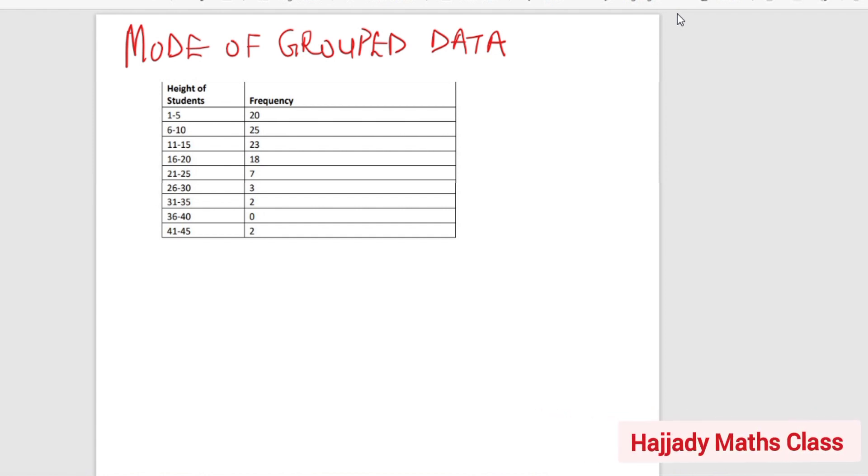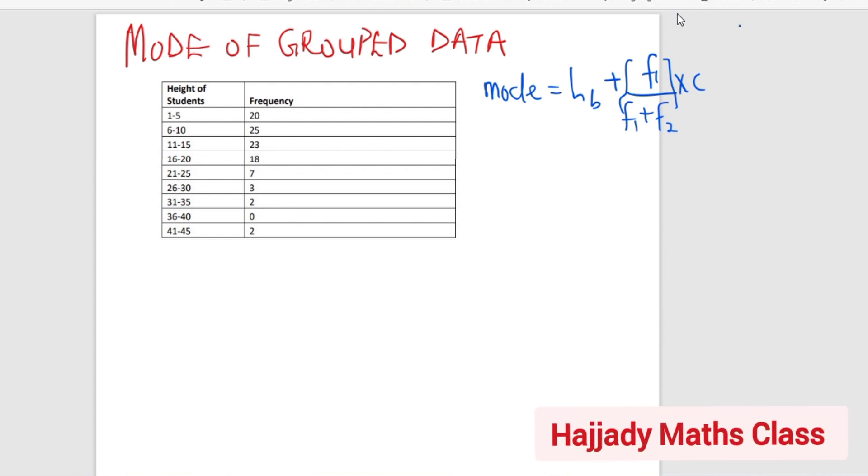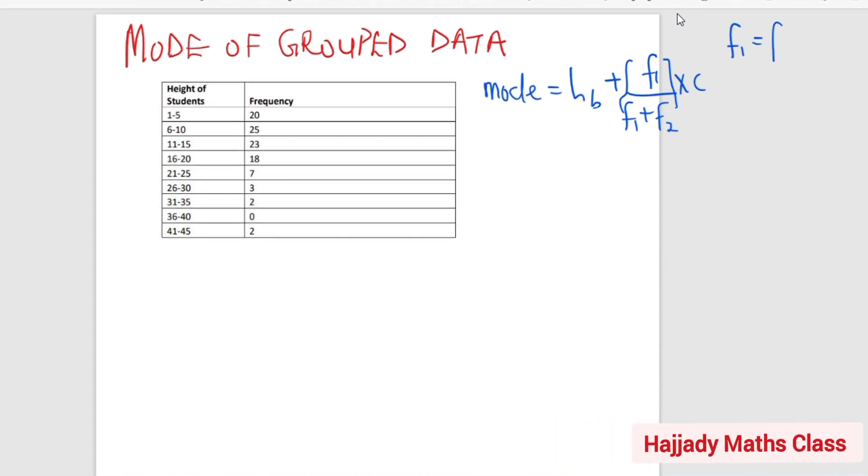And the formula for our mode of grouped data, we have that mode equals to the lower boundary, LB plus F1 over F1 plus F2 multiplied by C. So we can possibly easily put this in a bracket for easy computation. So where our F1 is the same thing as the frequency of the modal class minus the frequency before it.